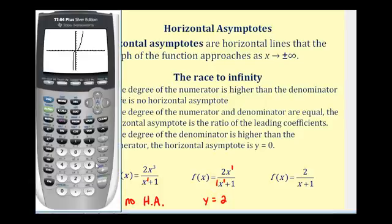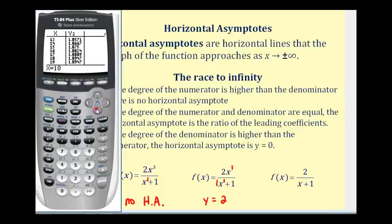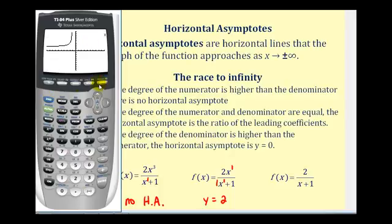Looking at this on the graphing calculator with y two turned on and viewing the table, we can see that as x increases the y value is approaching positive two. Looking at the graph, as x approaches positive infinity to the right the y value approaches positive two, and approaching negative infinity to the left it also approaches positive two.